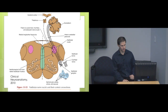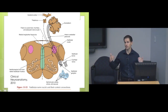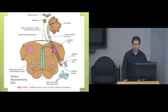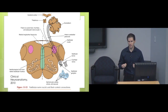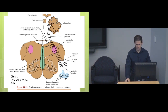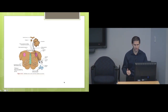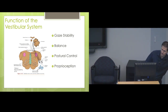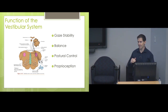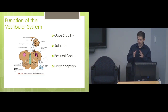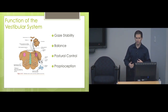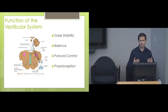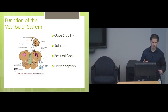There are also connections going to higher centers of the brain into the cerebral cortex via the thalamus. Given this anatomy, it's not surprising that the vestibular system is responsible for gaze stability — keeping our eyes fixed on a point while moving our head — as well as balance, postural control, and proprioception, knowing where we are in space.